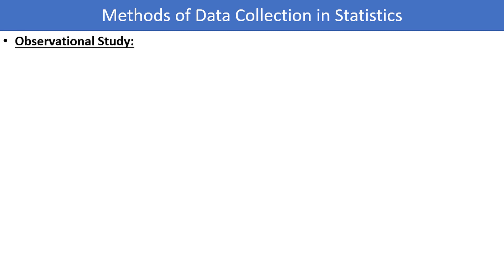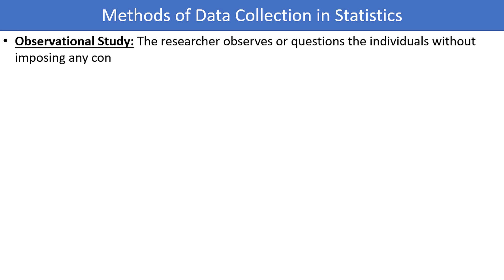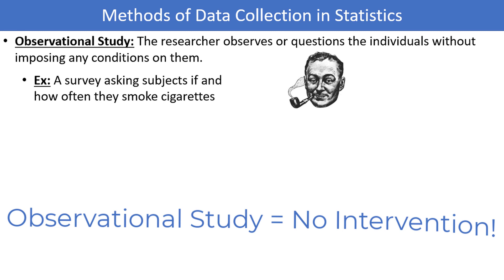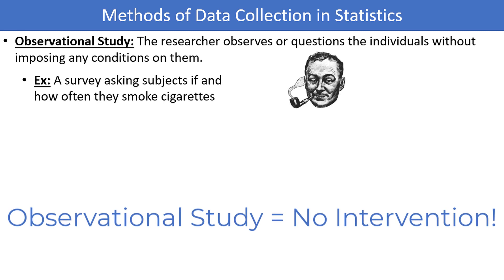In an observational study, the researcher observes or questions the individuals without imposing any conditions on them. Observations are taken without any active intervention to manipulate the outcome of the study. We might conduct a survey asking individuals how often they smoke cigarettes and then measure things like the rates of cancer or other health issues. There is no intervention on the part of the researchers, which is what makes this an observational study.